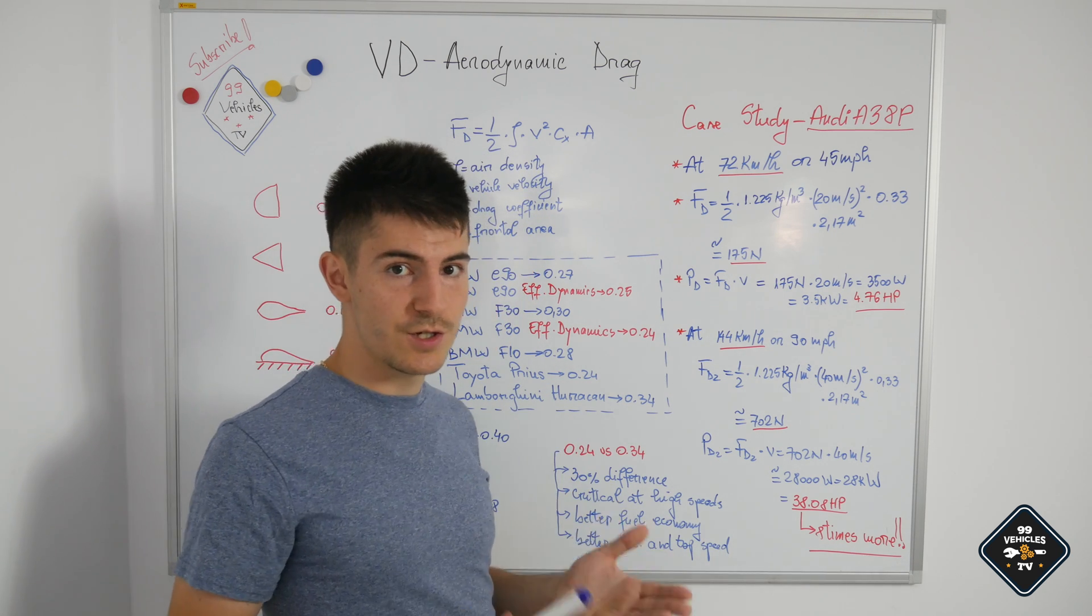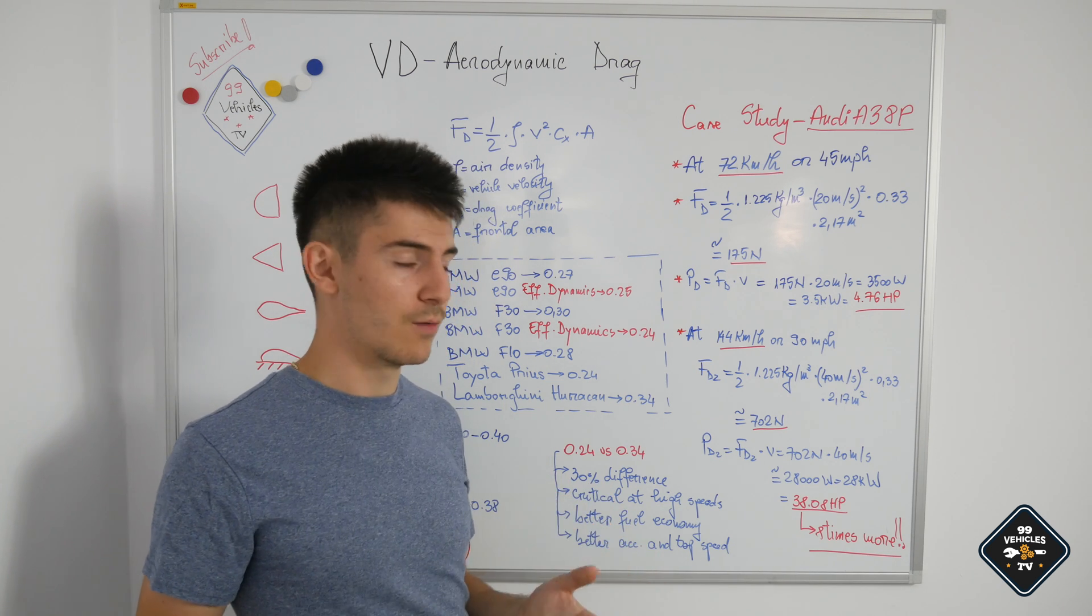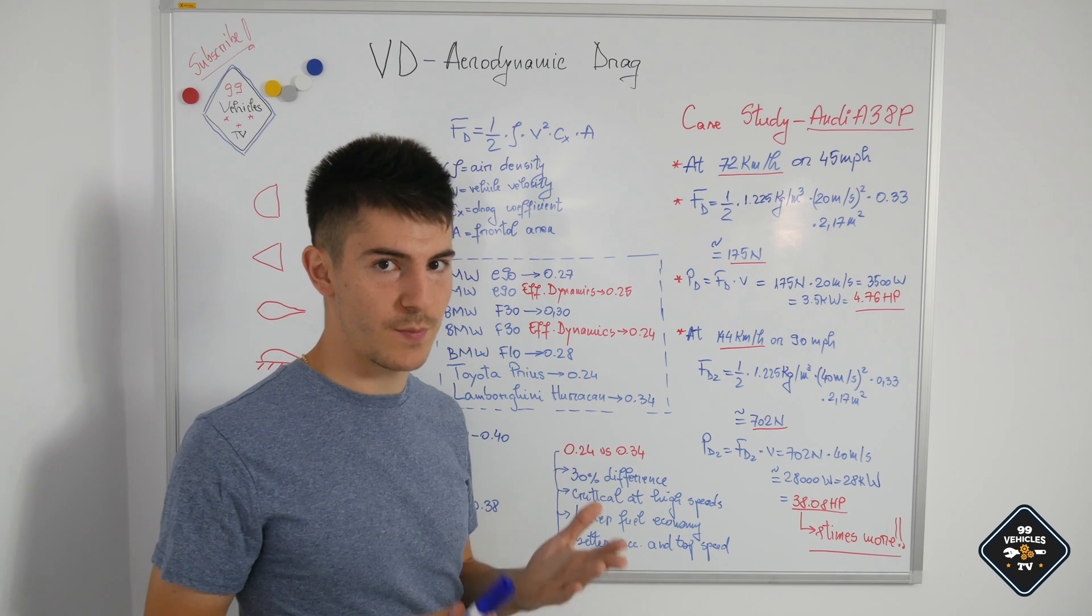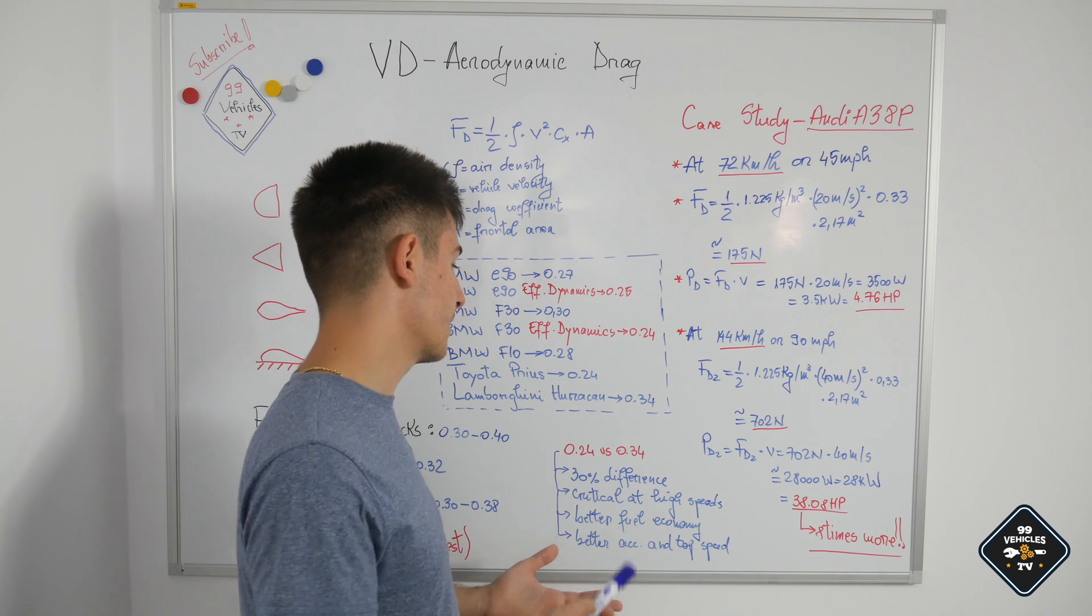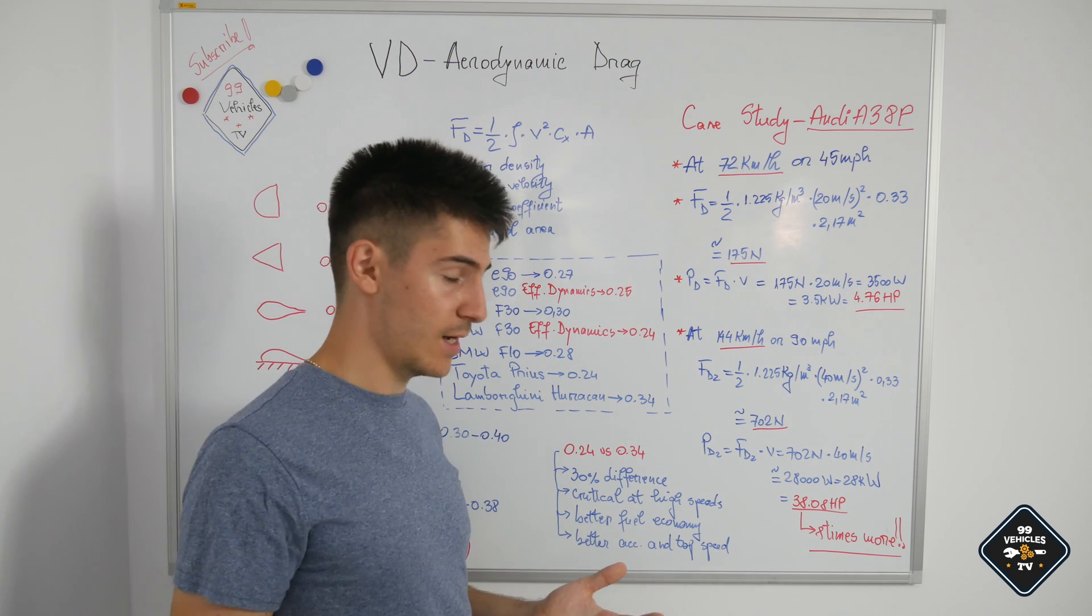That's why the Bugatti Chiron can go just up to around 430 kilometers per hour and has 1500 horsepower. It has a low aerodynamic drag because it needs to suck in air to cool down.